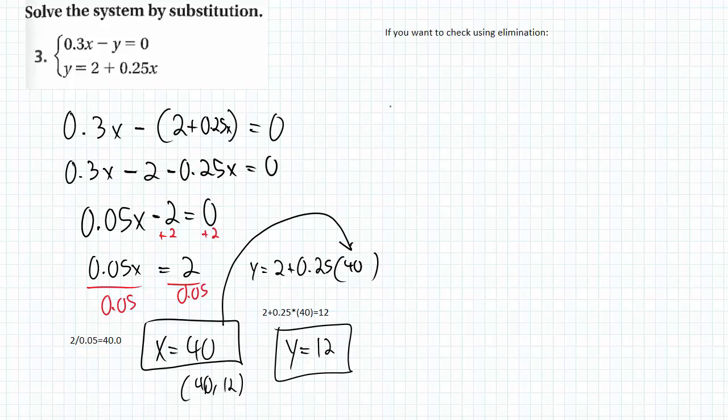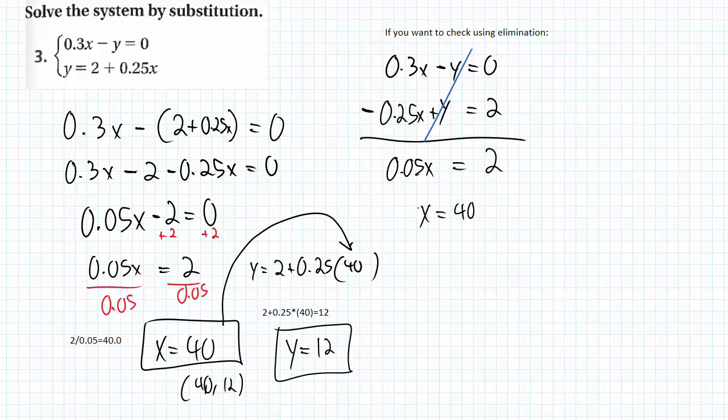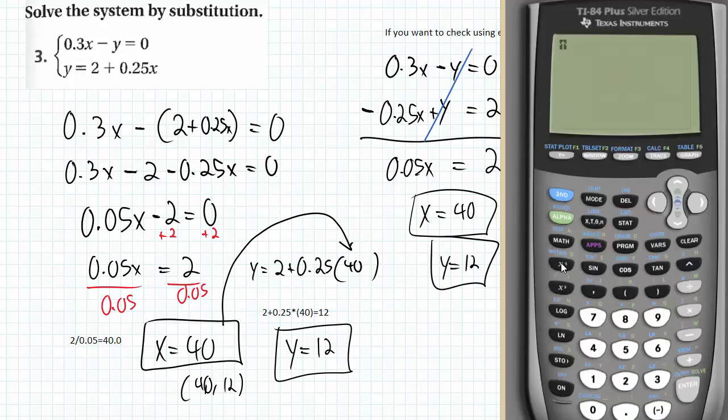So I get y equals 2 plus twenty-five hundredths times 40, and so I get y equals 12. Just to be sure that I'm doing it right, and maybe you'd prefer to do this by elimination, I'm going to show you how to do this using elimination really quickly. So let's say the second equation is not in standard form. I got to move the 0.25x to the left, so it becomes a negative 0.25x. The y's automatically eliminate because there's a 1 and a negative 1. You still get x equals 40 and y equals 12.